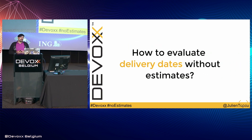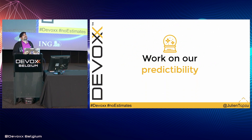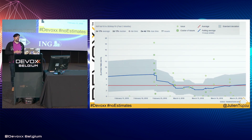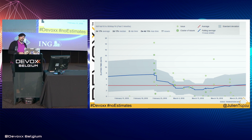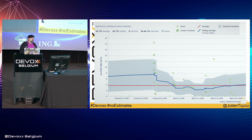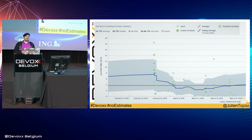Today we'll see how to evaluate release dates without traditional estimation. To be able to do that, we need to work first on our predictability. Perhaps you are using Kanban and Jira and you already see that kind of graph — a control flow chart that you can use in Jira. In that chart, you can see the evolution of what we call the cycle time of a team. The cycle time is the duration between the moment a developer has started a task until the moment it's been released in production. That's something really used in Kanban, but you can use it with Scrum as well.